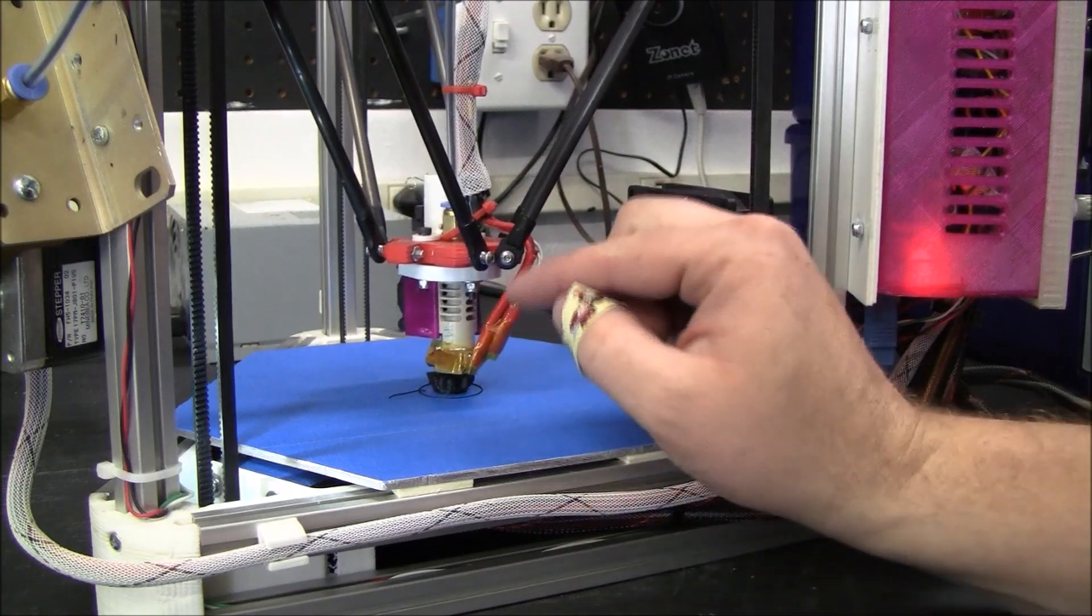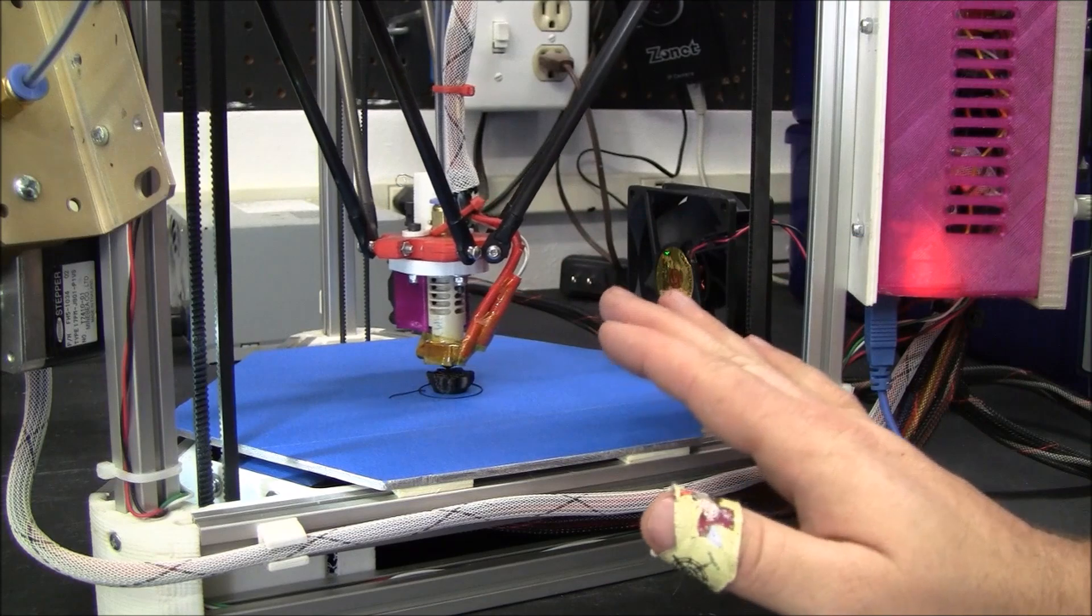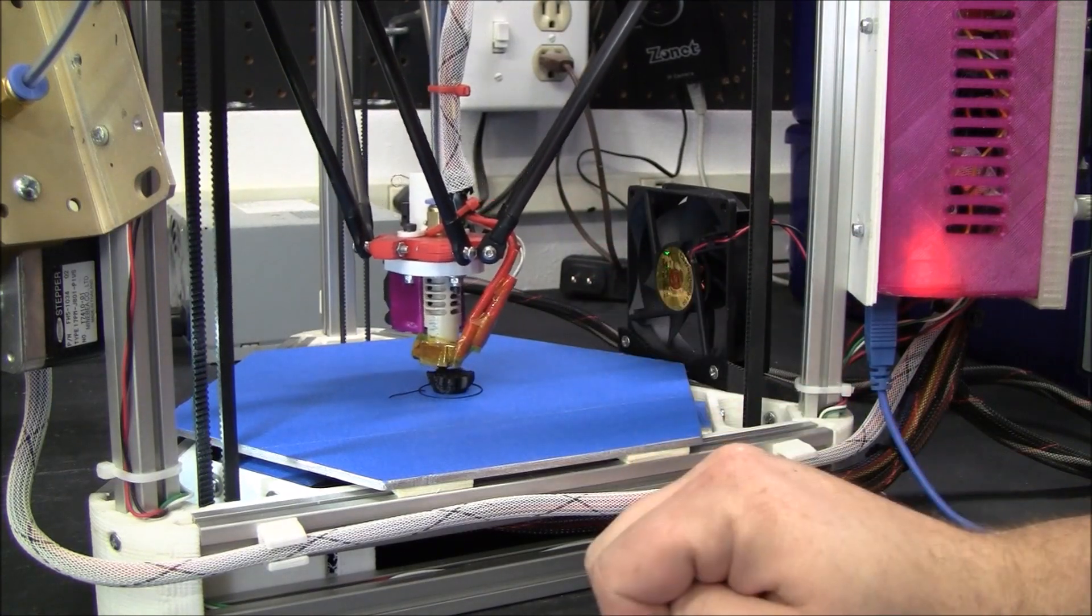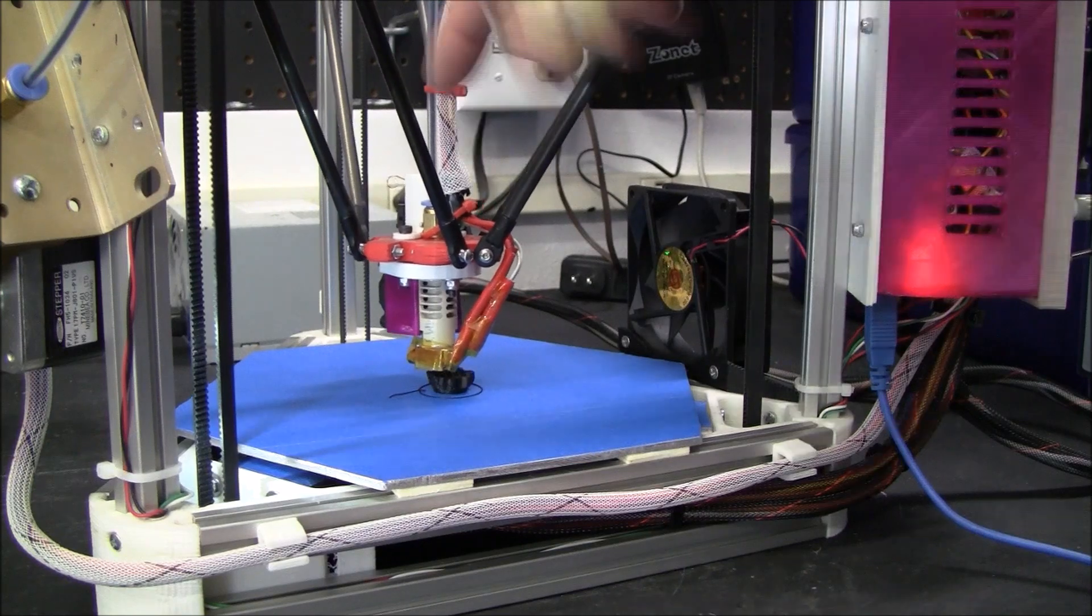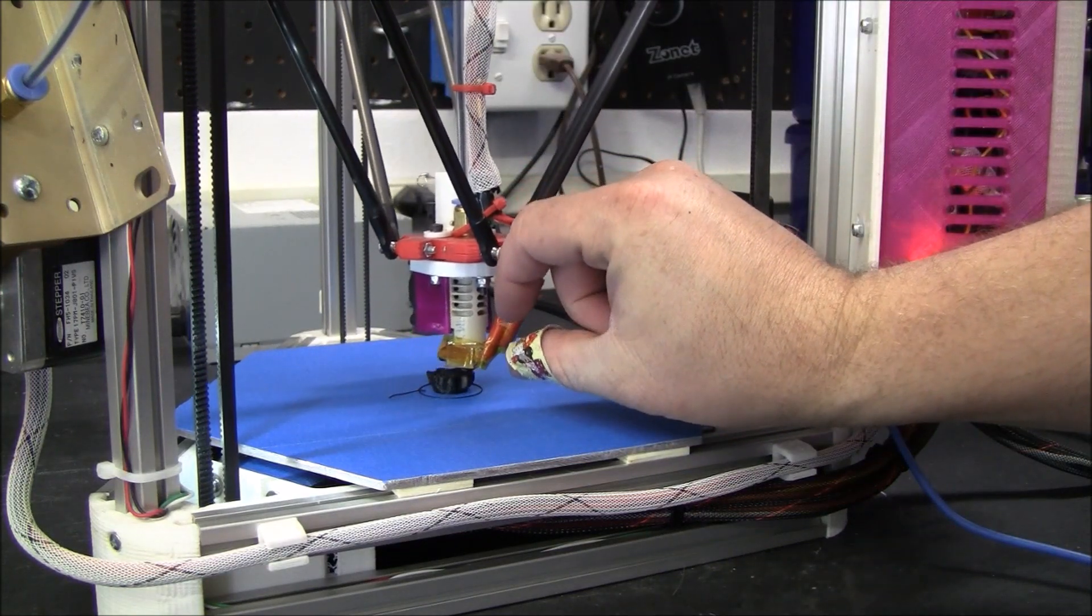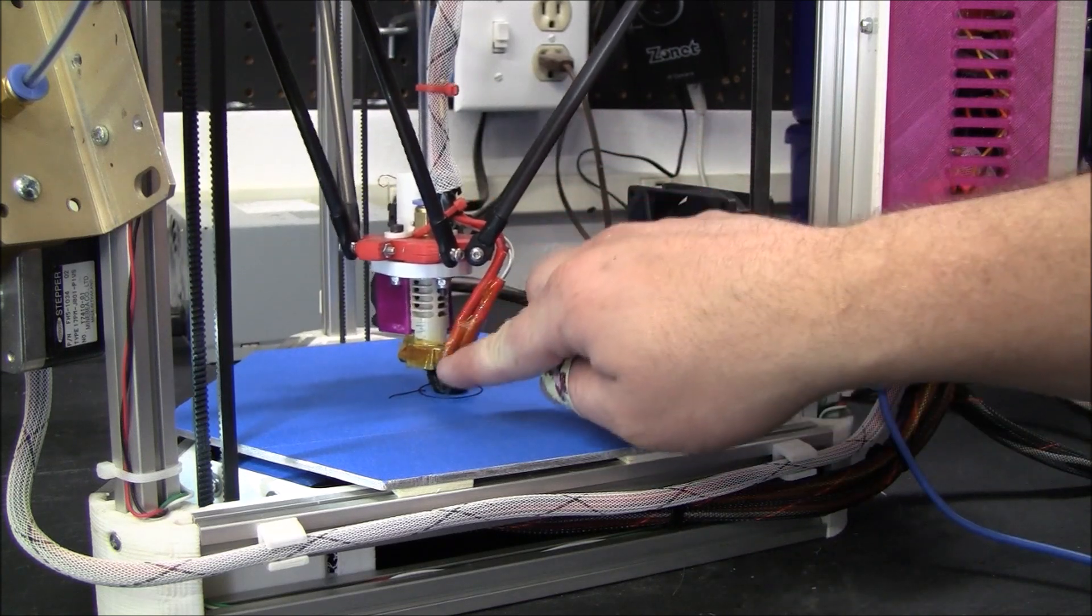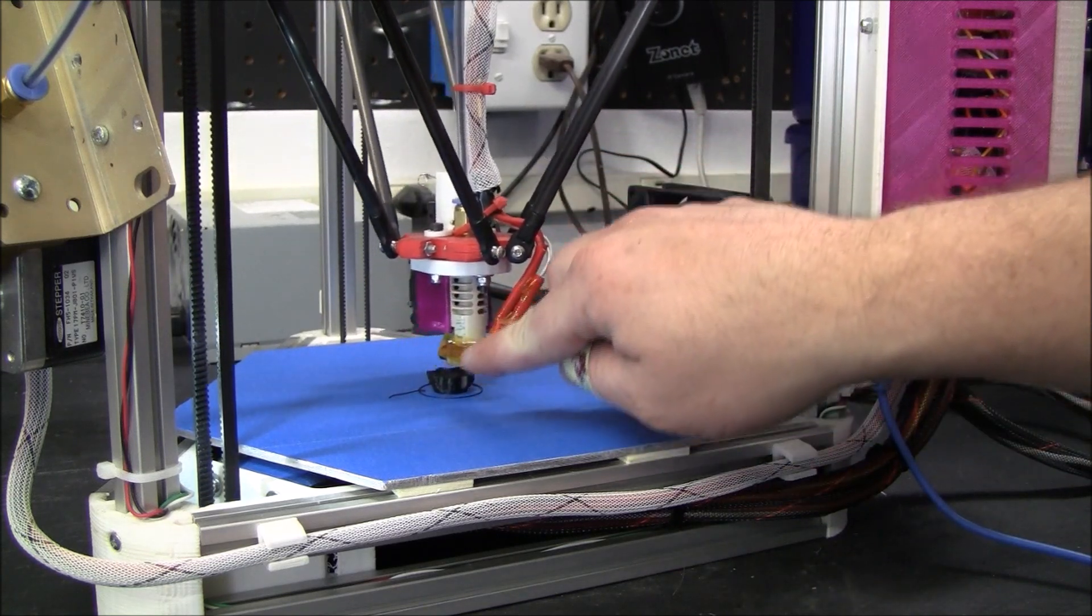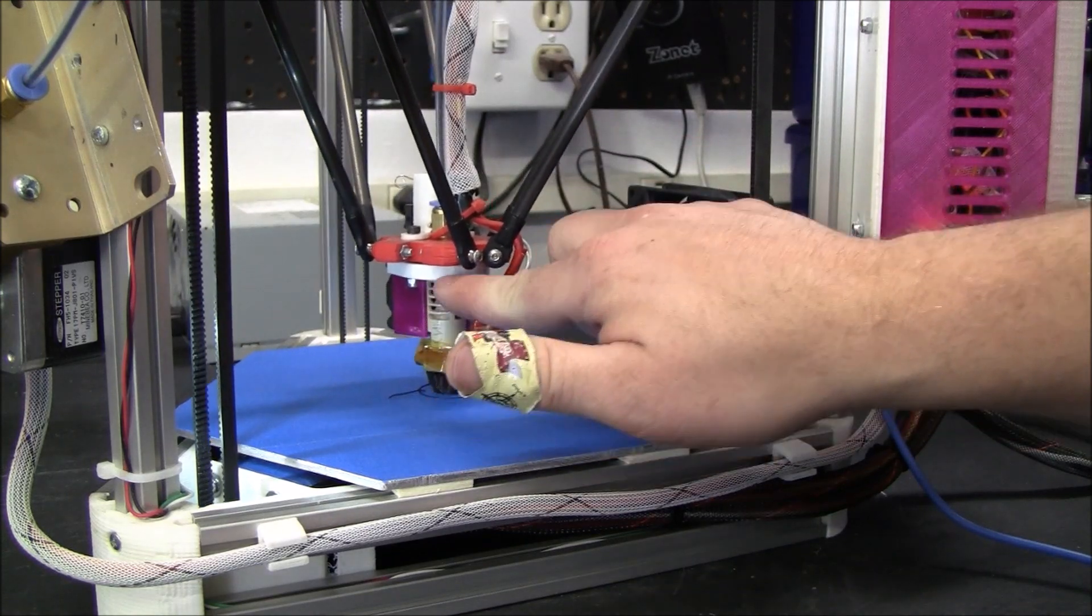So why would you want a cooling fan on your hot end? Well, it's to prevent extruder jams. Specifically PLA filament, as it comes down and it heats up, PLA will expand. So you want to heat it up in the very bottom portion of the hot end. This part up here you want it to be as cool as possible.